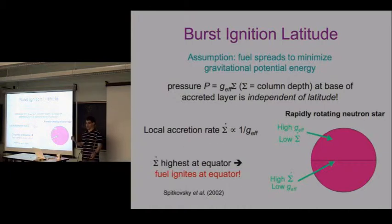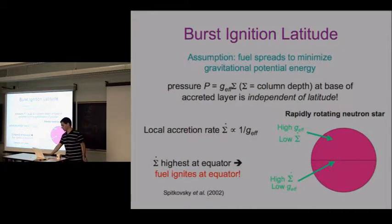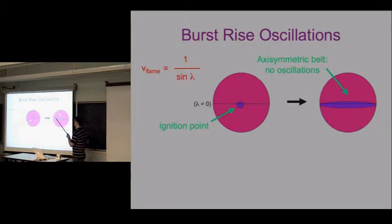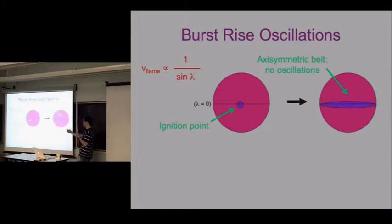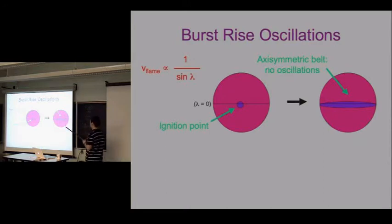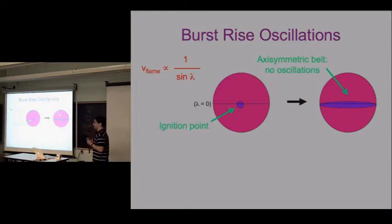We expect ignition at the equator first because the local accretion rate is highest there. But what happens with equatorial ignition? The flame spreads really fast at the equator but gets much slower as you move north-south. So you get a very axisymmetric belt that grows slowly toward the poles. Since there's no non-axisymmetry when you rotate this, it looks basically the same, so you're not going to get any oscillations. But we know we see oscillations in many rises of Type 1 X-ray bursts.